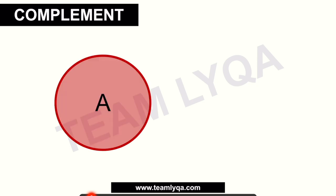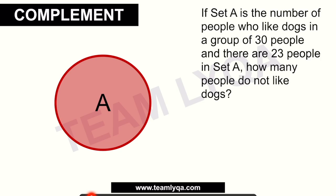The complement of set A refers to everything outside of set A. For example: if set A is the number of people who like dogs, in a group of 30 people, and there are 23 people in set A, how many people do not like dogs? The key word here is 'do not' — we're looking for those outside set A.